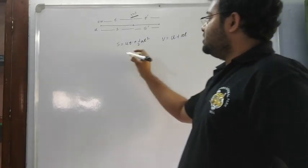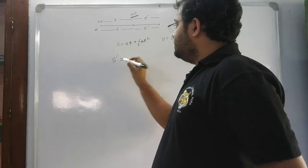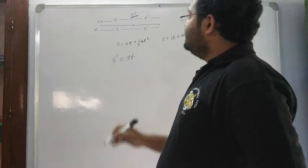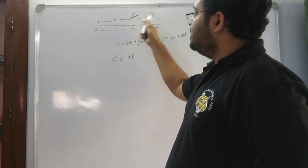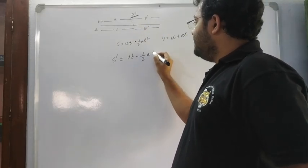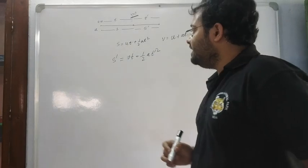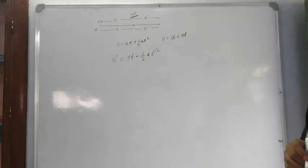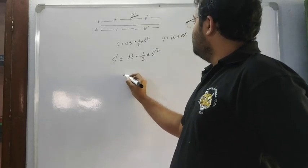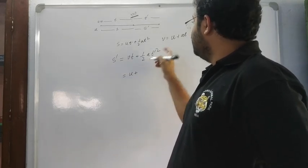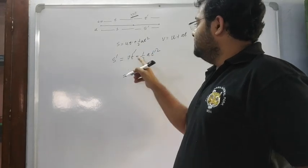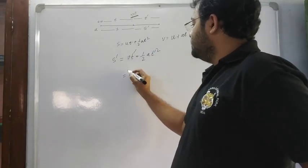S dashed is equal to V t' dashed plus half A t' dashed squared, where V t' dashed plus half A t' dashed squared gives us the displacement in the second part.